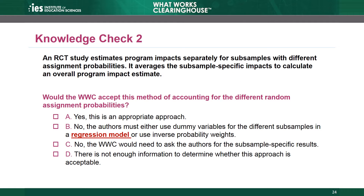Knowledge Check 2. A study estimates program impacts separately for subsamples with different assignment probabilities and averages the subsample-specific impacts to calculate an overall program impact estimate. Would the WWC accept this method of accounting for the different random assignment probabilities? Choice A: Yes, this is appropriate. Choice B: No, the authors must either use dummy variables for the different subsamples in a regression model or use inverse probability weights.